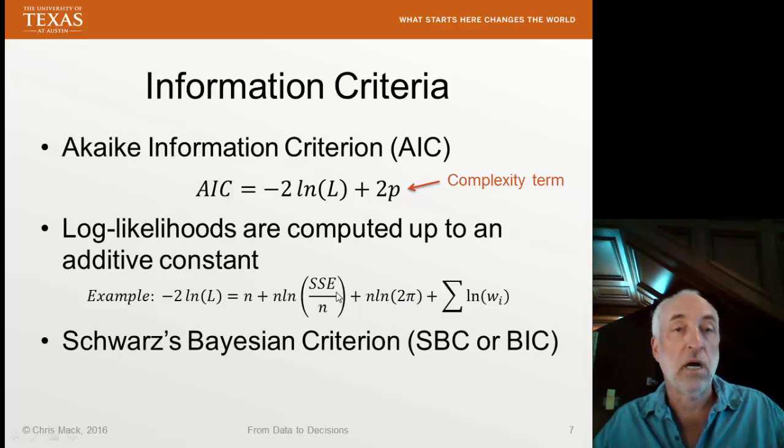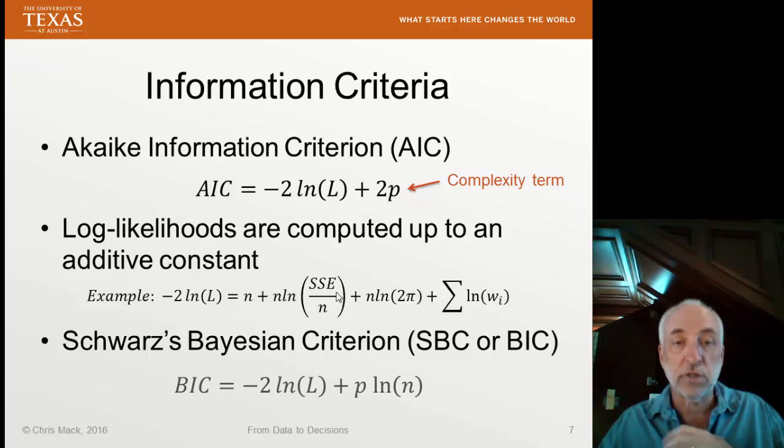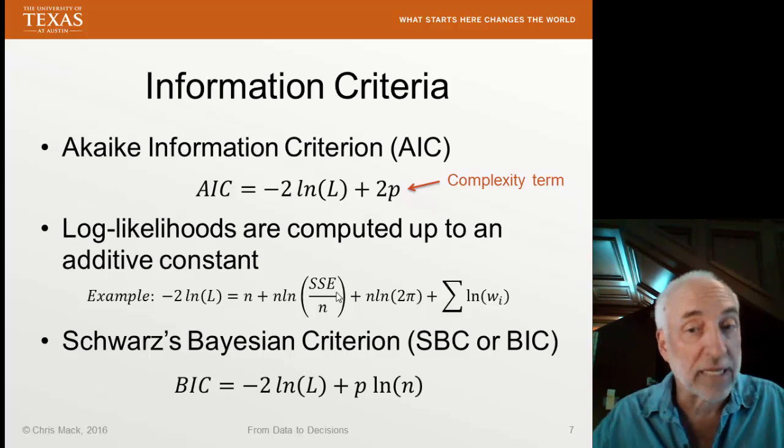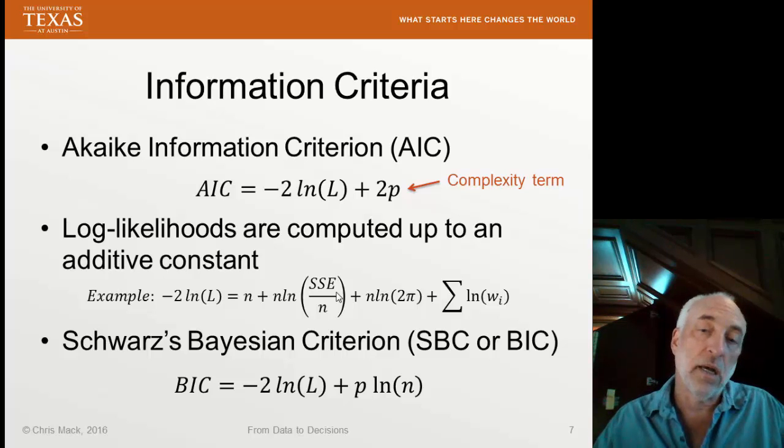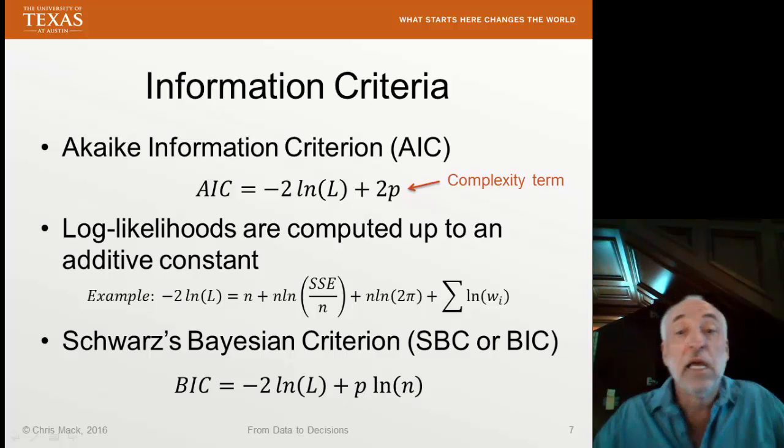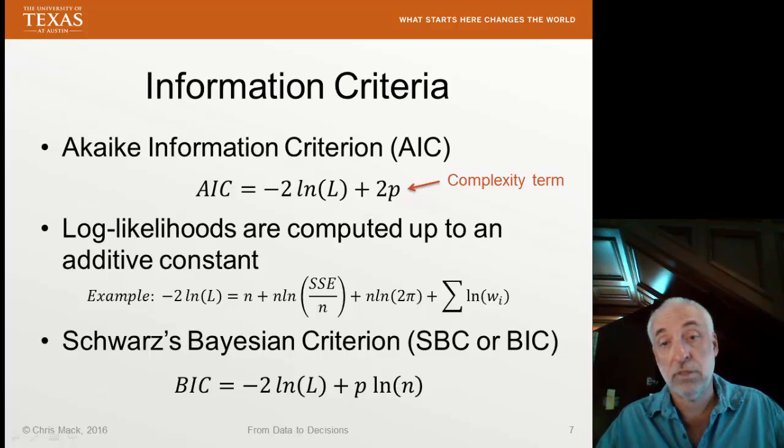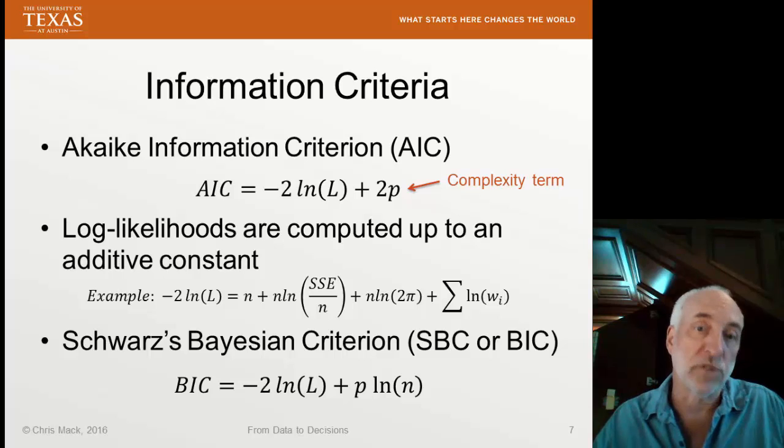Now, there's another information criterion called Schwarz's Bayesian criterion or Bayesian information criterion. You'll see both of those terms used. And it uses a different complexity term. Instead of two times p, it uses p times log of n. Well, is that bigger? Is this complexity term penalizing my criterion more? Well, it depends on the value of n. If n is 8 or larger, then the natural log of n would be bigger than 2. And for that reason, BIC penalizes you more for a more complex model that has a larger value of p, as long as n is 8 or more, which is almost always going to be the case.